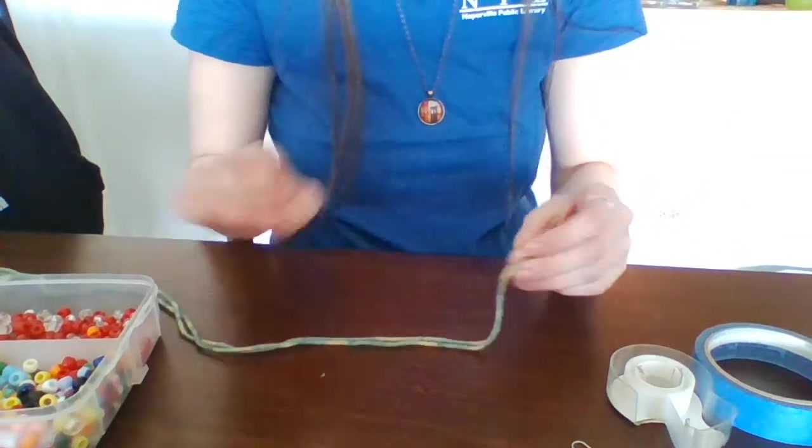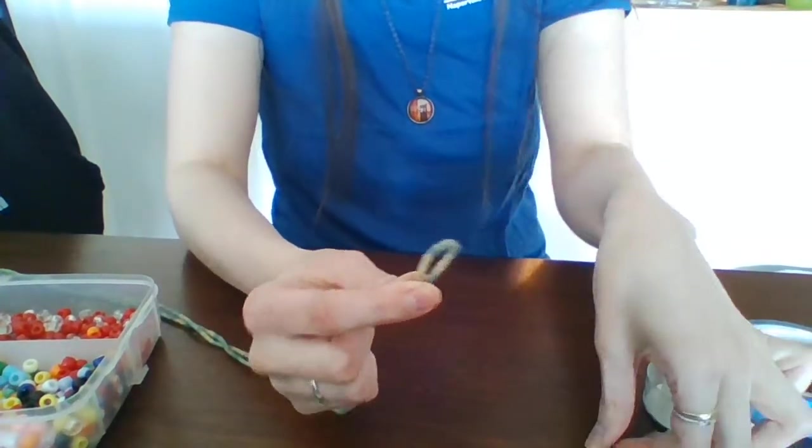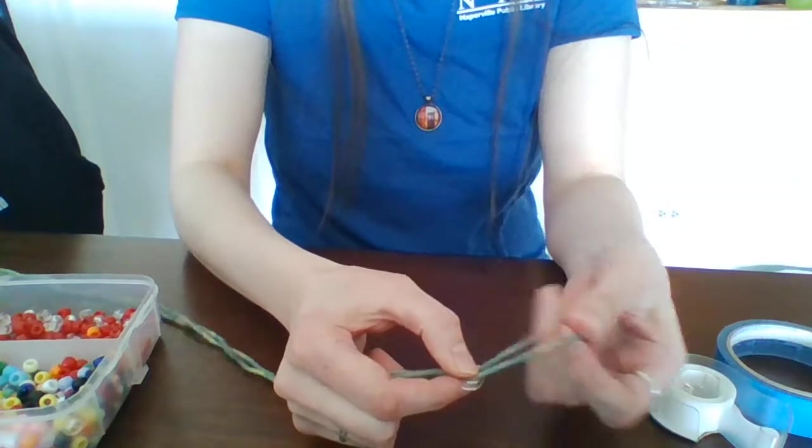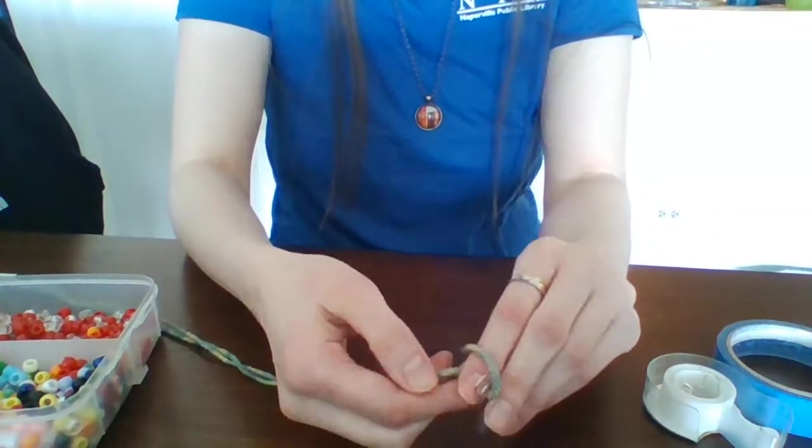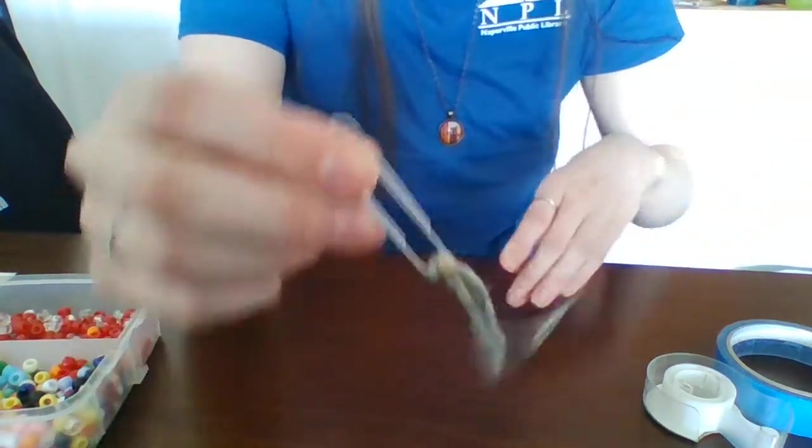Next go ahead and take your yarn and fold it in half. Take the loop of the yarn, push it through your paperclip or keyring, and then pull the loose ends through that loop pulling tight to create a knot.